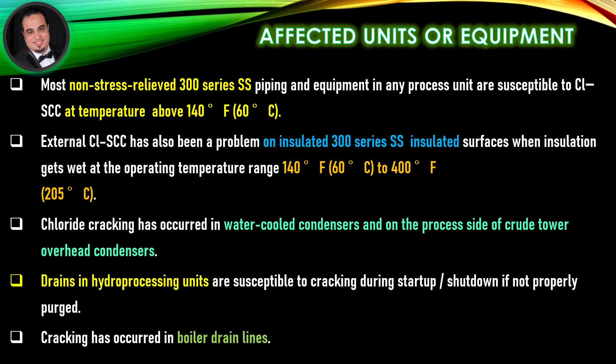Affected units or equipment: Most non-stress-relieved 300 series stainless steel piping and equipment in any process unit are susceptible to chloride stress corrosion cracking at temperatures above 140 degrees Fahrenheit. External chloride stress corrosion cracking has also been a problem on insulated 300 series stainless steel surfaces when insulation gets wet at operating temperatures ranging from 140°F to 400°F.